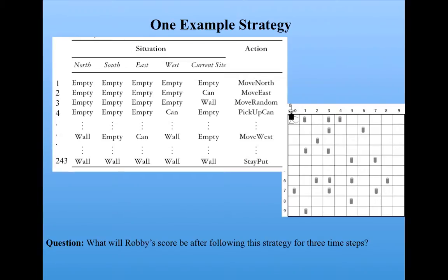And now I can ask a question. What will Robbie's score be after following this strategy for three time steps? We saw at time step one, he crashed into a wall. Well, in this world, he bounces back into the same site he was before, and he finds himself in exactly the same situation. Rather stupidly, I admit, given that he's in the same situation, he has to take this action again. So he would crash into a wall again.